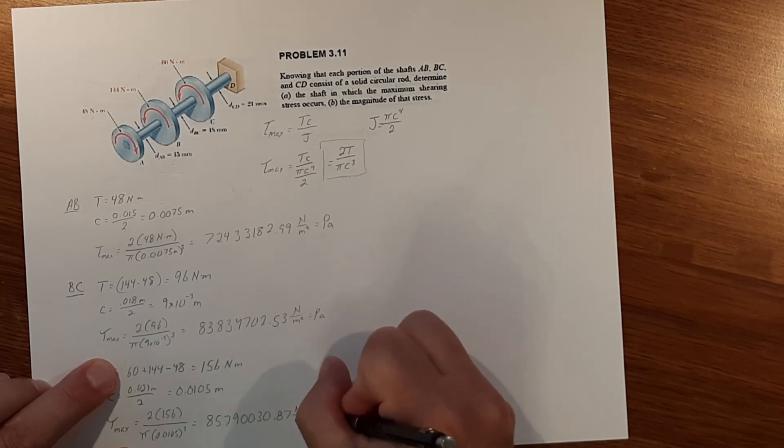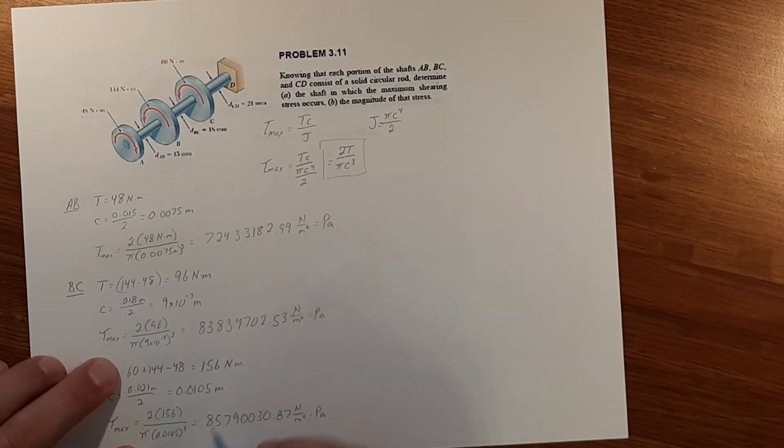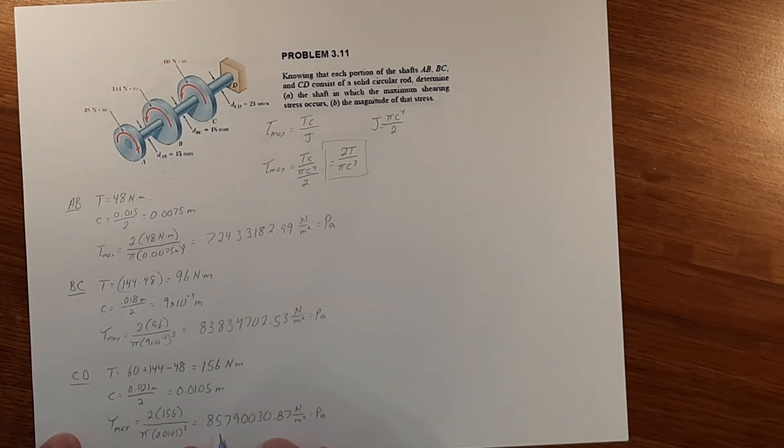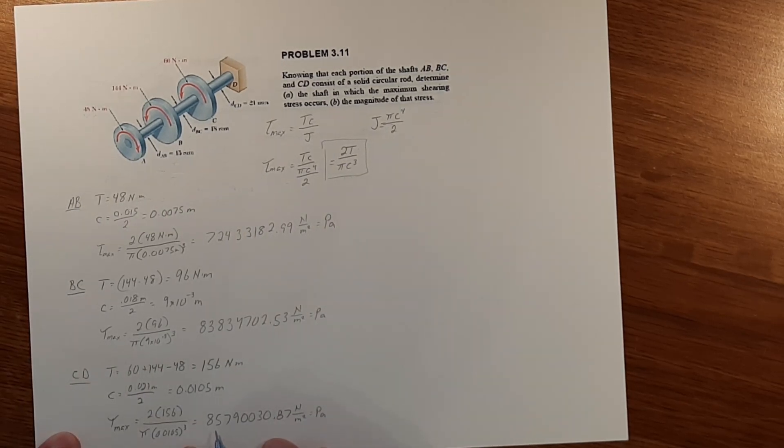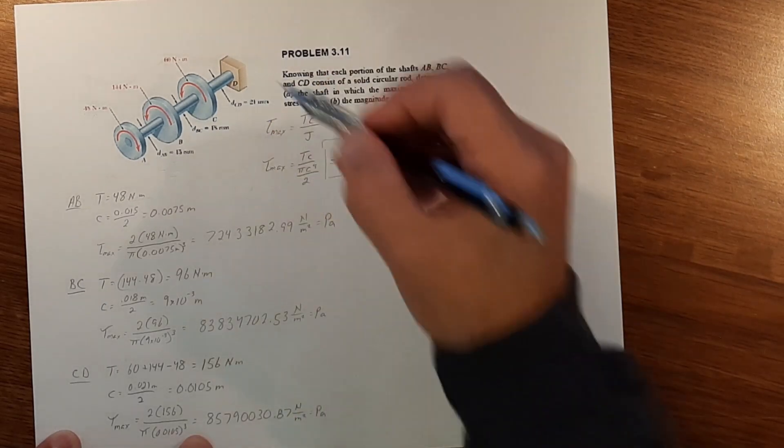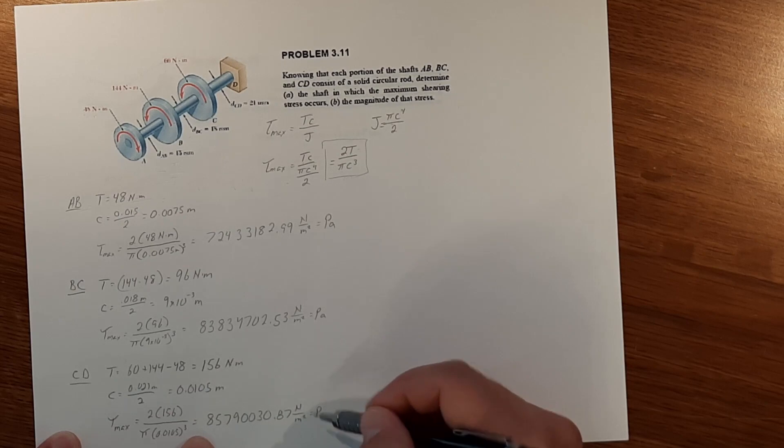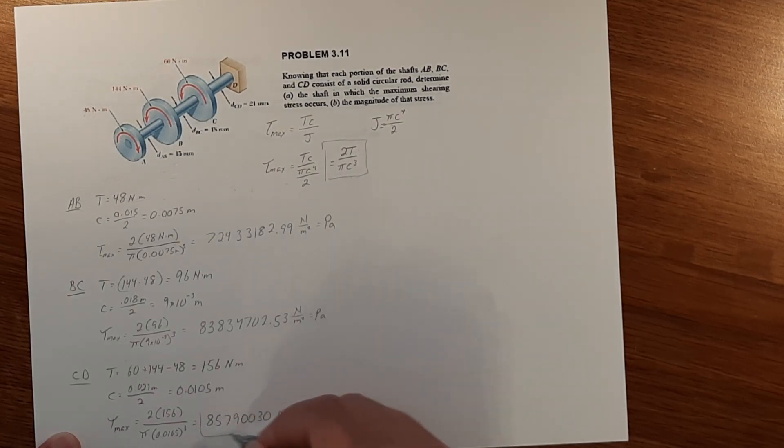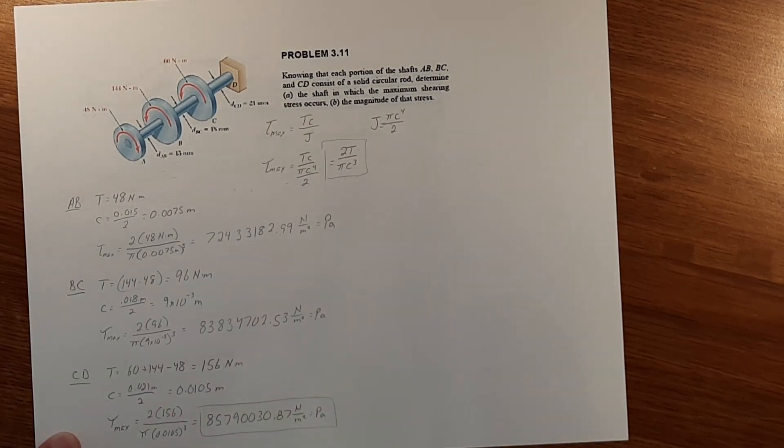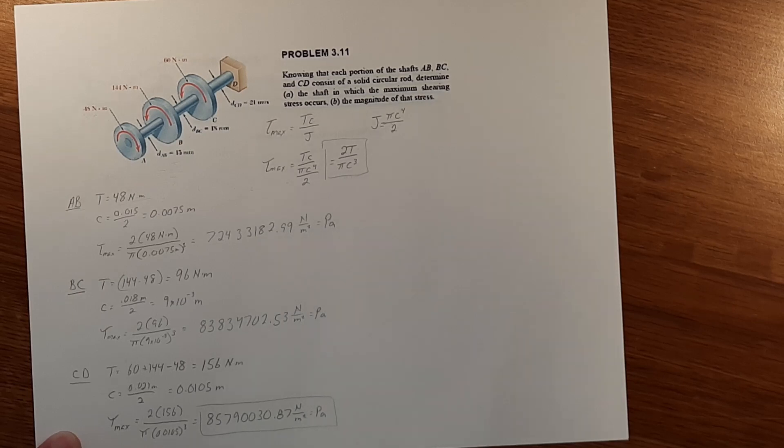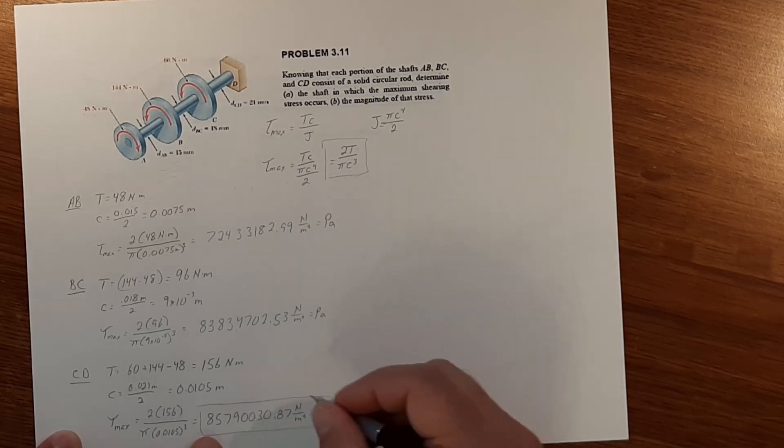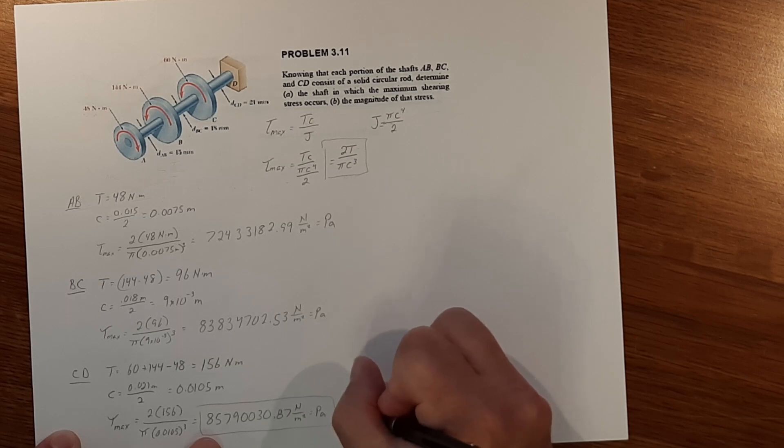Looking here it appears that shaft CD has the maximum shearing stress because this is the largest value. Since that is the largest value that is going to be also the magnitude.